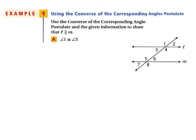In example 1, we're going to use the converse of the corresponding angles postulate and the given information to show that the lines are parallel. In part A, we know that angle 1 and angle 5 are congruent. So the next step would say L and M are parallel, and the reason is because of the converse of the corresponding angles theorem.